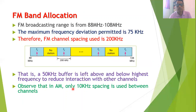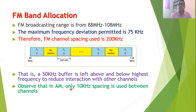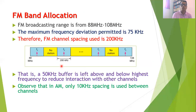In AM, only 10 kHz spacing is used between channels, while in FM the channel spacing is about 200 kHz — much more than AM.